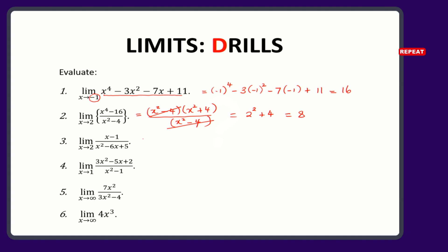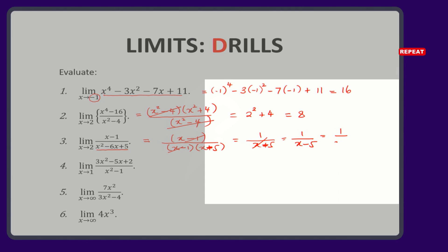The third problem is such that if we factorize the denominator, we should end up having x minus 1 in the numerator. Down here, because it's quadratic, if we did it right, you will have x minus 1 times x plus 5. This will cancel, so we end up with 1 on x plus 5. If we substitute with 2 — actually this should be negative 5, not positive, I beg your pardon — so it's 1 on x minus 5. We'll have 1 on 2 minus 5, and that will give us 1 on negative 3.